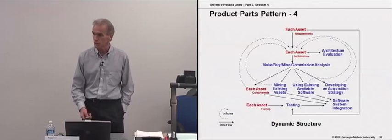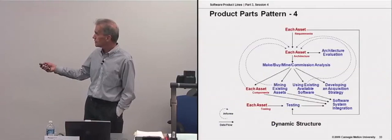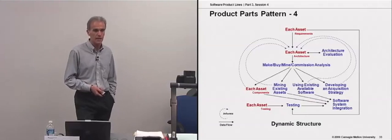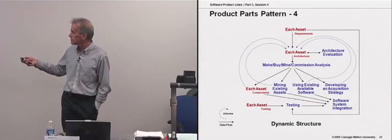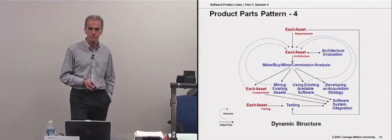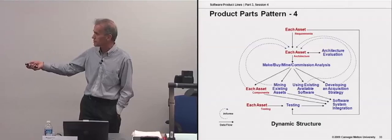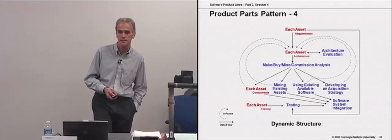The graphical representation then shows the patterns, each asset pattern that this pulls in, in red, and the remaining practice areas in blue. So you instantiate each asset for the requirements, the architecture, the components, and the test-related assets.